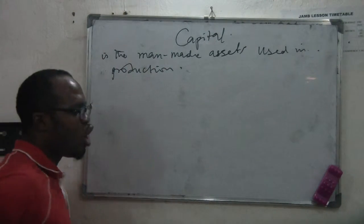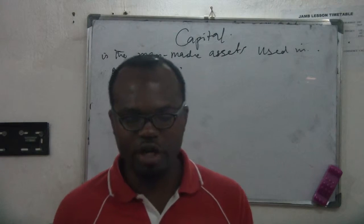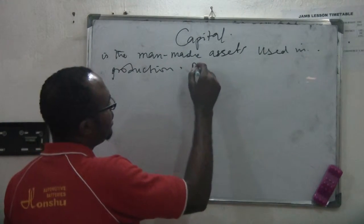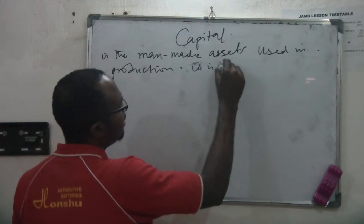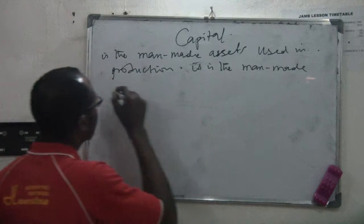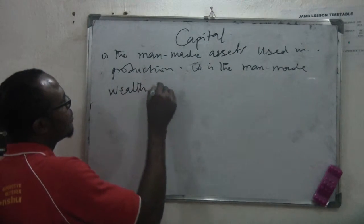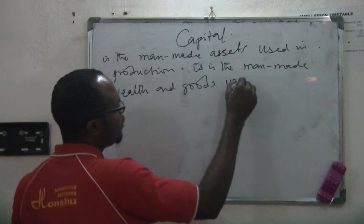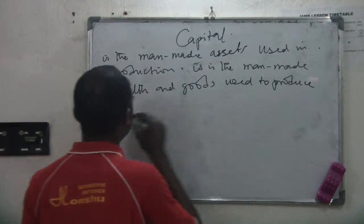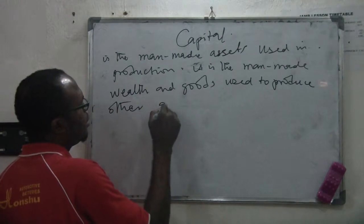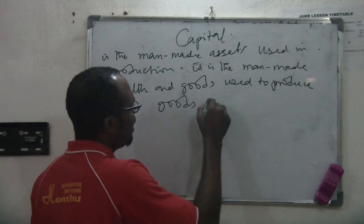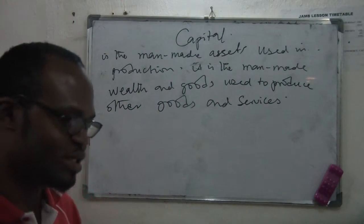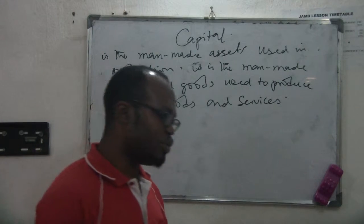Capital is not just money, but all the man-made assets that are used in production. In other words, capital refers to man-made wealth — the man-made wealth and goods. Wealth includes money and goods used to produce other goods. Capital could also be said to be goods, wealth, and money that you use in producing other goods and services.